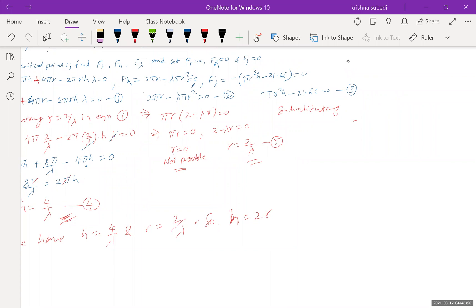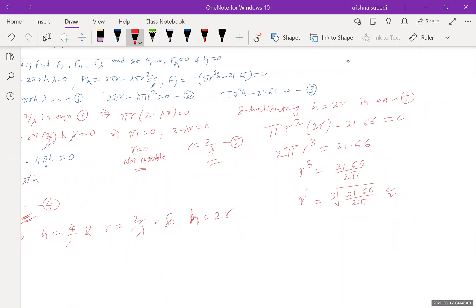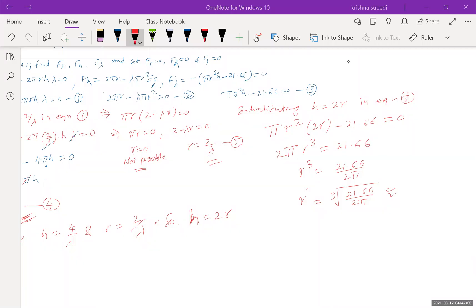So we can write h equals 2r. So substituting h equals 2r in equation 3, we're going to get pi r squared times 2r minus 21.66 equal to 0. So you're going to get 2 pi r cubed equals 21.66. So you're going to get r cubed equals 21.66 over 2 pi. And r equals cube root of 21.66 over 2 pi. I don't have calculator, I need your help, guys. So approximately how much? You're going to get decimal, I think 2 digit after decimal should be fine.